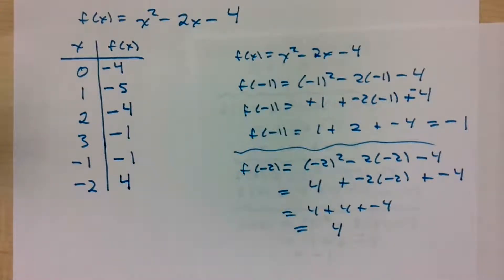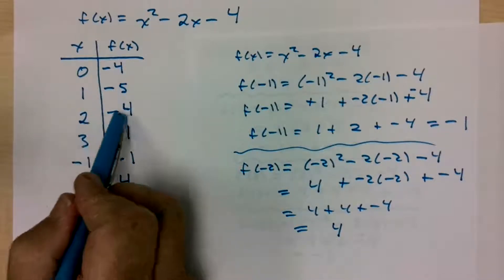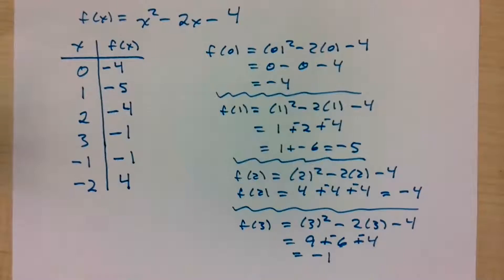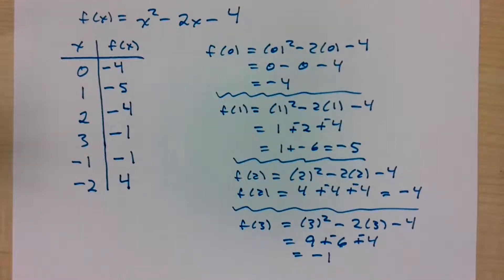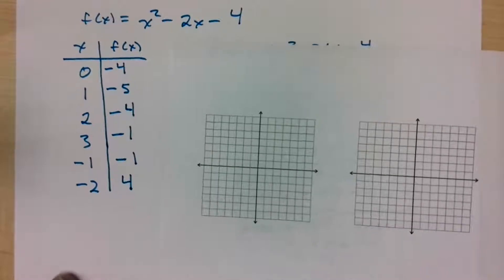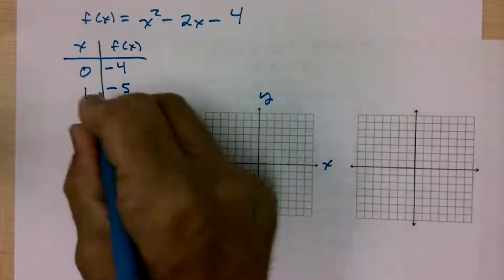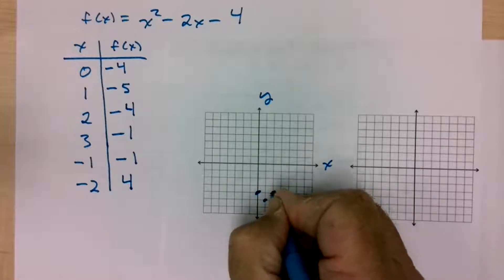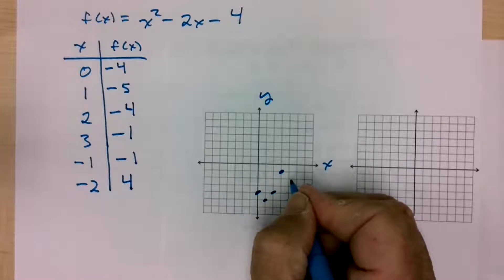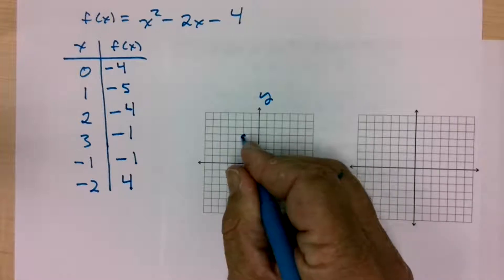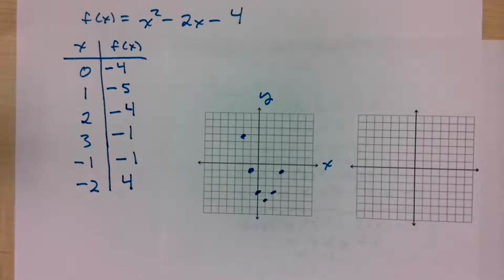So we have all these points to graph: (0, negative 4), (1, negative 5), (2, negative 4), (3, negative 1), (negative 1, negative 1), and (negative 2, 4). Plotting them on the graph paper: x equals 0, y equals negative 4; x equals 1, y equals negative 5; x equals 2, y equals negative 4; x equals 3, y equals negative 1; x equals negative 1, y equals negative 1; x equals negative 2, y equals 4. You'll notice it's going to be a parabola of some sort.